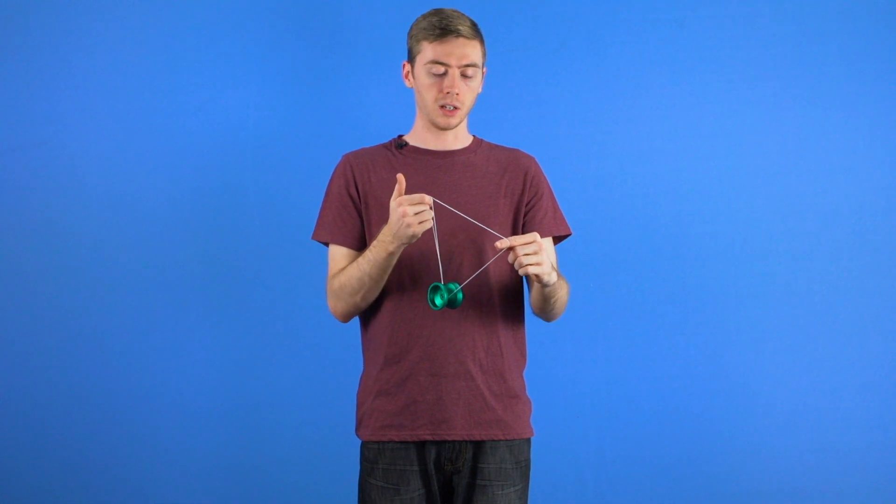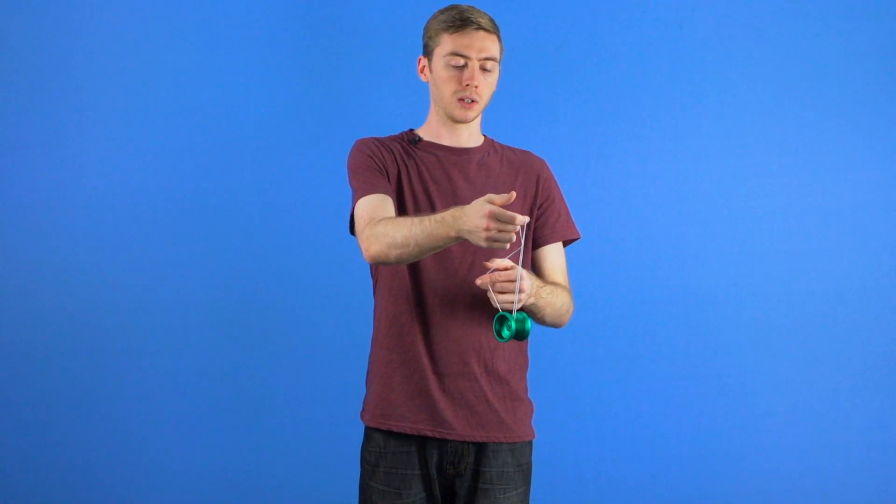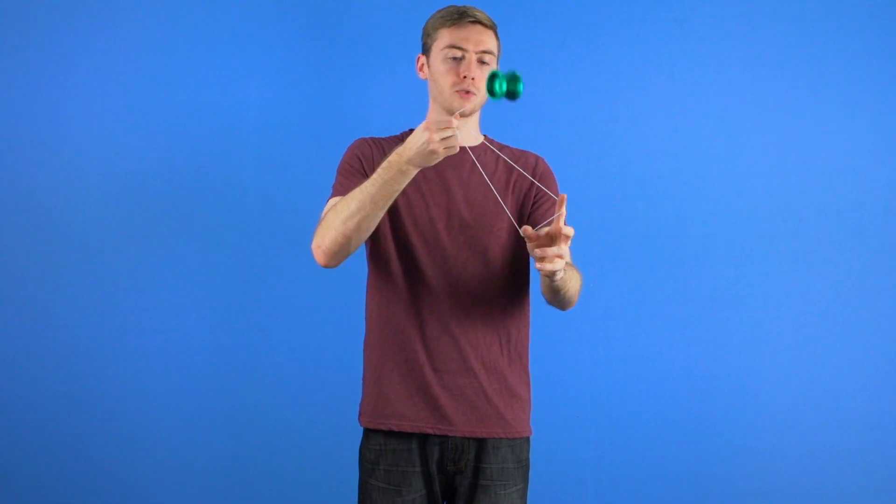To get out of it, you're simply going to do the inverse of what you did to get in. So you'll start from the front string and you'll swing out the back around the whole formation back onto the back string and you're back in split bottom mount.